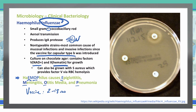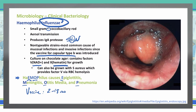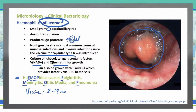Haemophilus influenzae causes epiglottitis. In this picture, taken from a top-down view looking down the throat at the epiglottis, you can see a very severely inflamed epiglottis. This inflammation makes it very difficult for patients to breathe or swallow, and for food to pass down — this is the large-scale inflammation caused by Haemophilus influenzae infection.